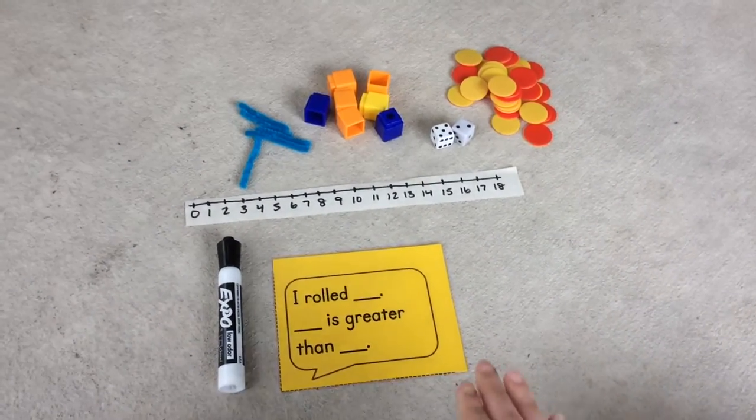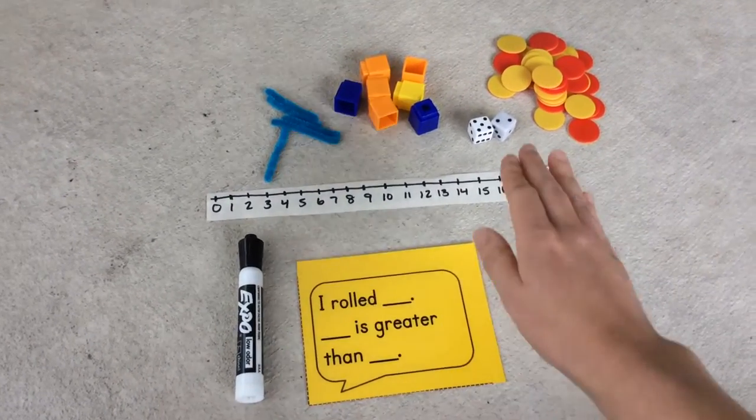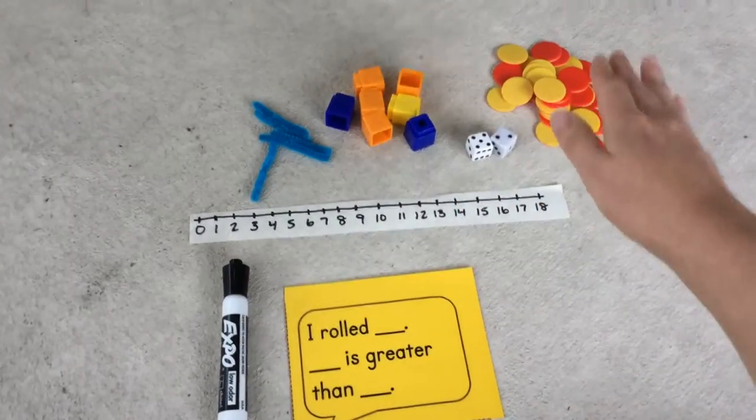The materials you need are your recording sheet, dry erase marker, dice, and counters.